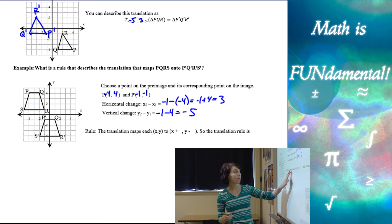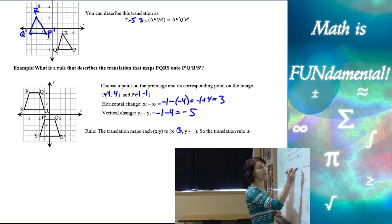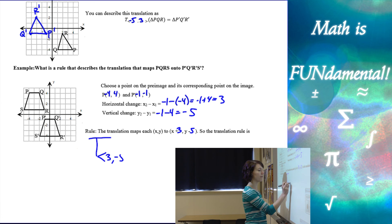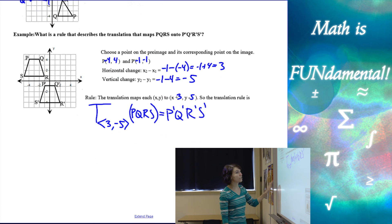So the rule that maps each of our points from our pre-image, x, y, to our new points is going to be x plus 3 and x minus 5. So the translation rule, we use a large T, make our arrow brackets. We have positive 3 horizontally, negative 5 vertically. Then we put our pre-image. So we have P, Q, R, S. And that's going to equal P prime, Q prime, R prime, and S prime. And there's our notation for translation.